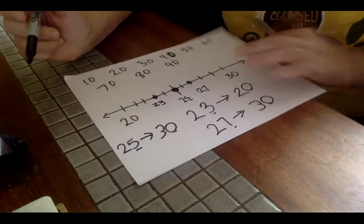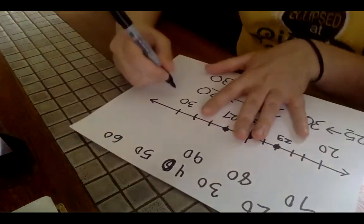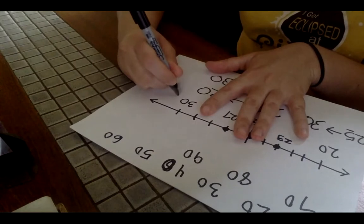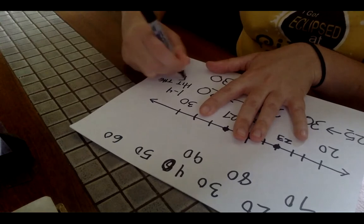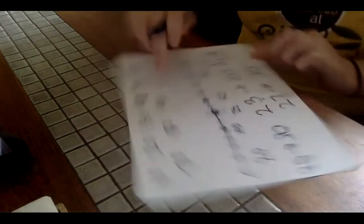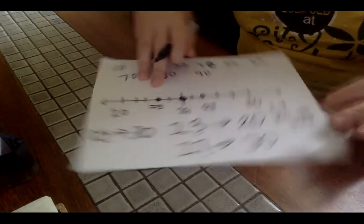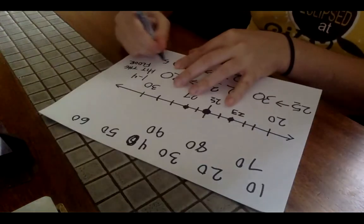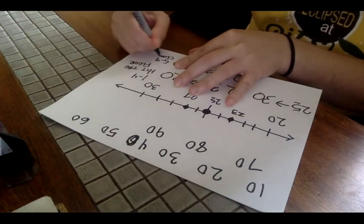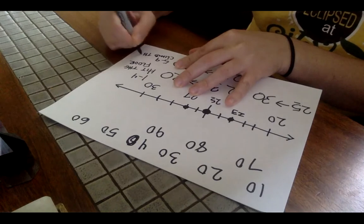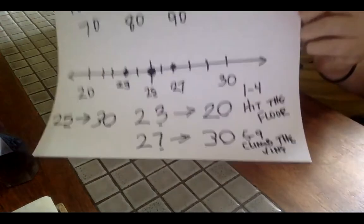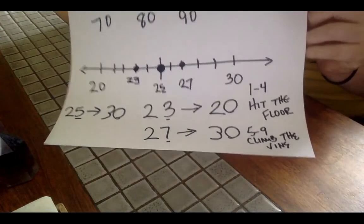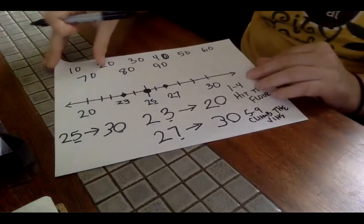And there's a little rhyme to help you remember. So you got one through four, hit the floor. That means you're going to stay on the tens floor you're on. Five through nine, climb the vine. And that means you're going to round up to the next 10. One through four, hit the floor. Five through nine, climb the vine. So let's do a little bit more practice.